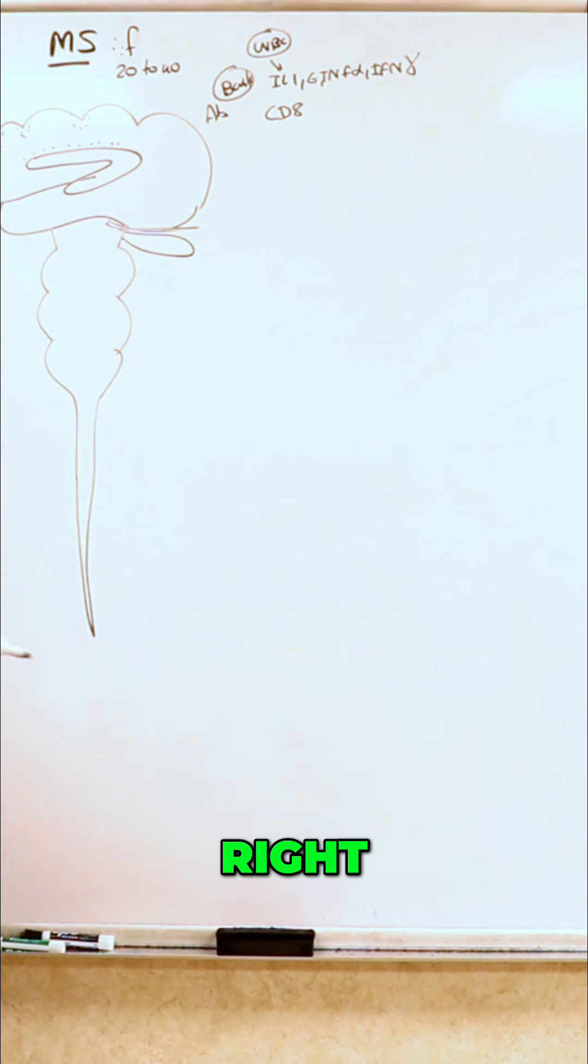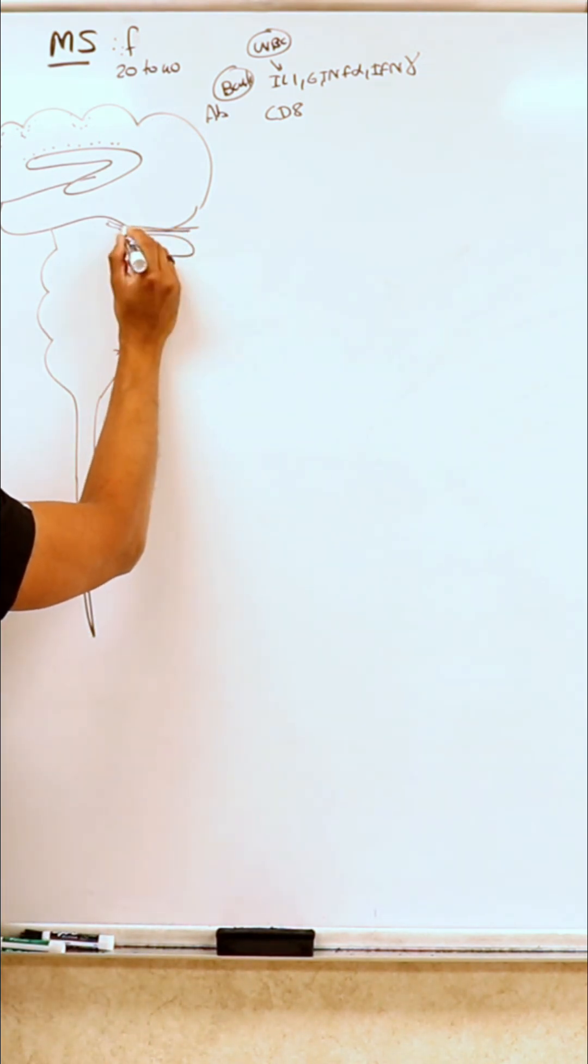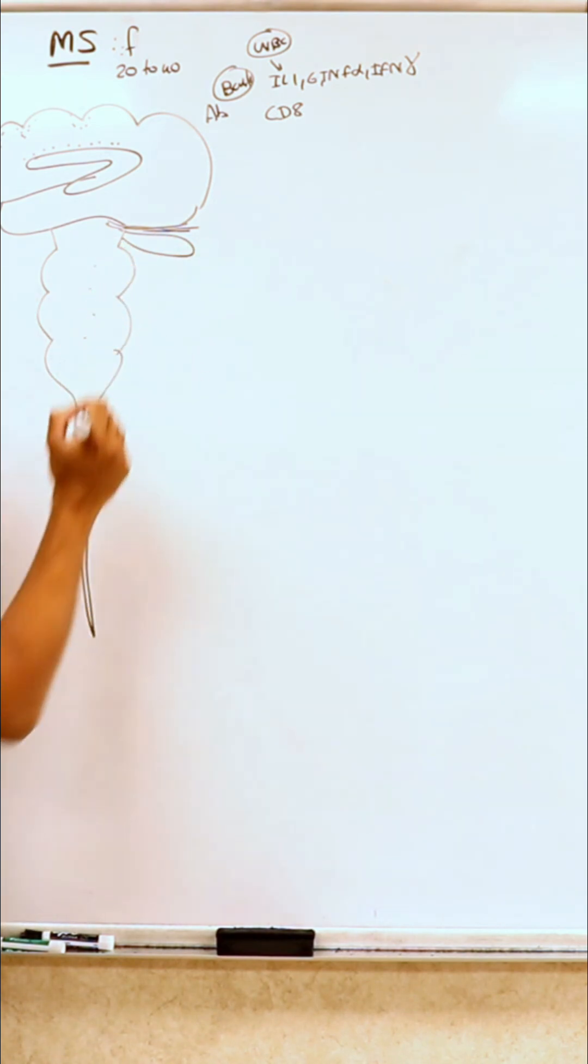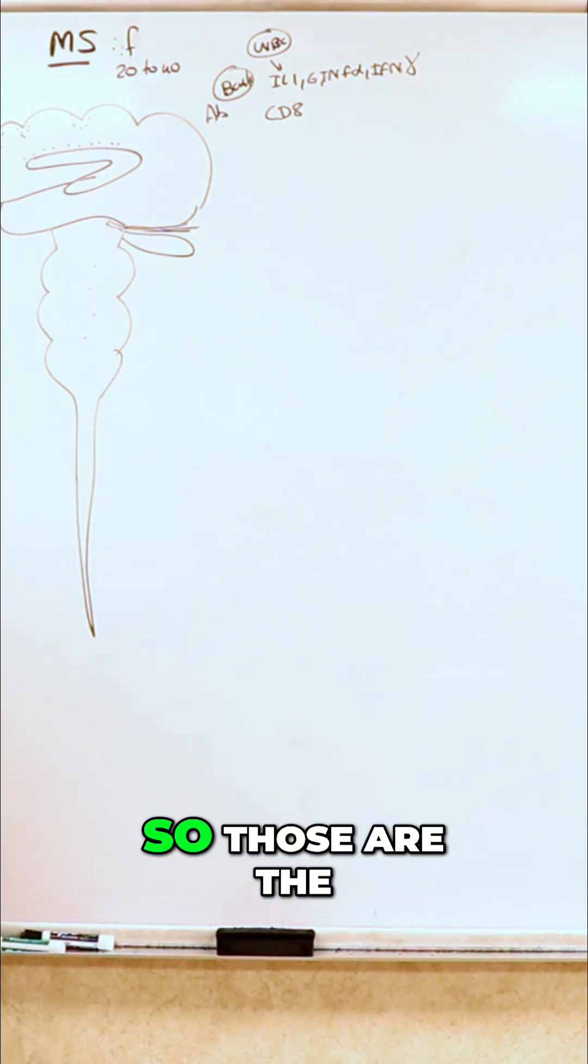These areas are going to get affected. Then you're also going to get infratentorial, which is going to be your brainstem. And lastly, it's going to affect your spinal cord.